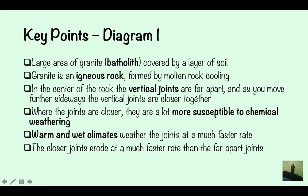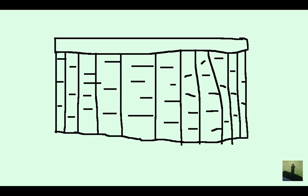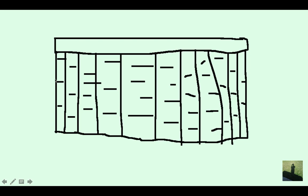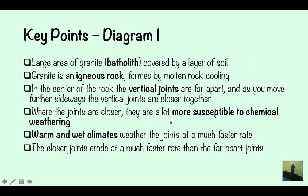The large area of granite is called a bathylith, and it's covered by a layer of soil. So this bit here is the granite and this bit up here is the top layer of soil. That's something that you'd have to annotate on your diagram. Granite is an igneous rock formed by molten rock cooling.